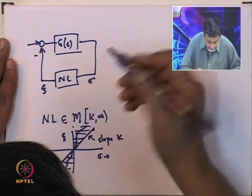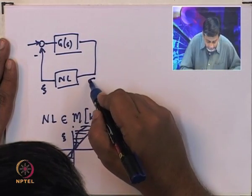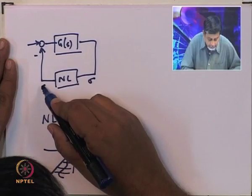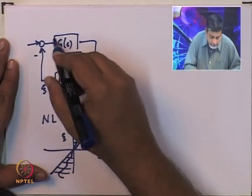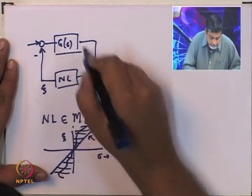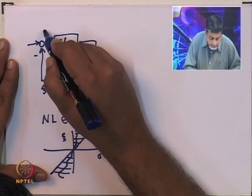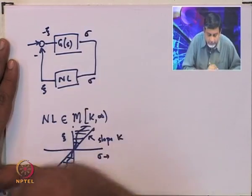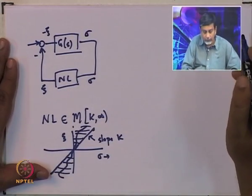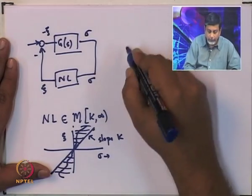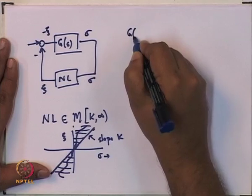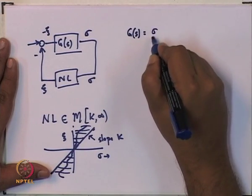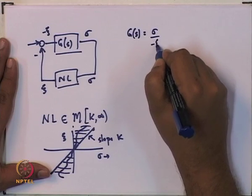Going back to the loop: if sigma is the input to the non-linearity and psi is the output, then by the way this is drawn, the input to the linear plant is minus psi and the output of the linear plant is sigma. In other words, G can be thought of as sigma divided by minus psi.